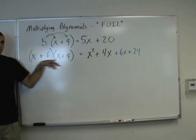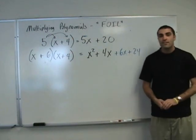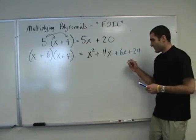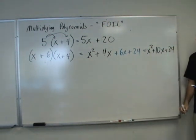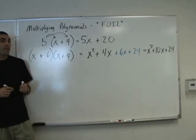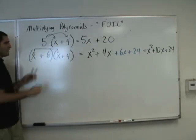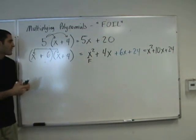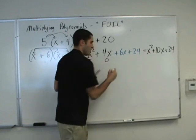This is the type of problems we're going to be working with today. Can these be combined in any way? x squared plus 10x plus 24. That's foiling. The reason they call it FOIL is: you multiply the first terms — that's F. Then you multiply the outer terms — that's O.